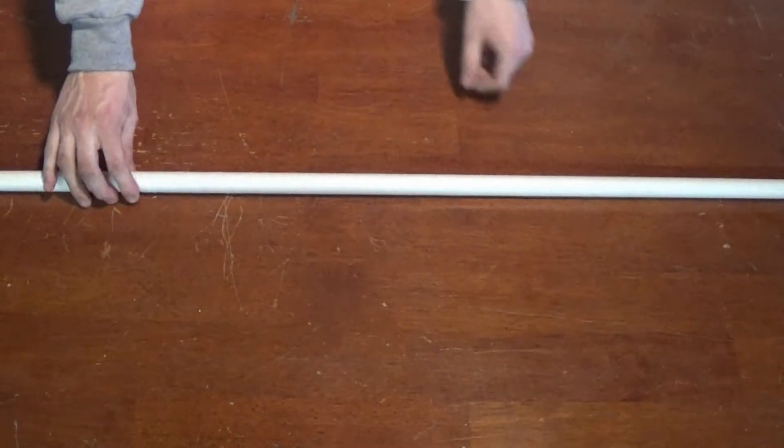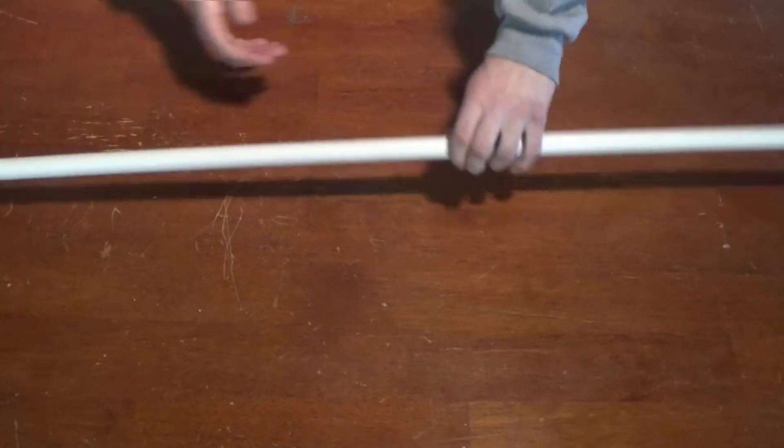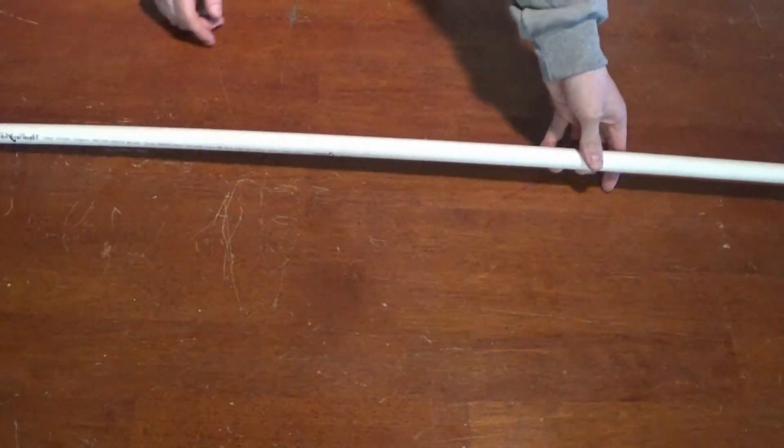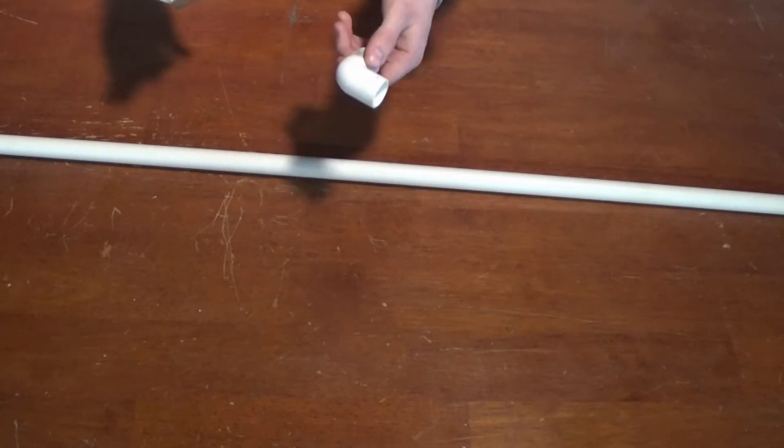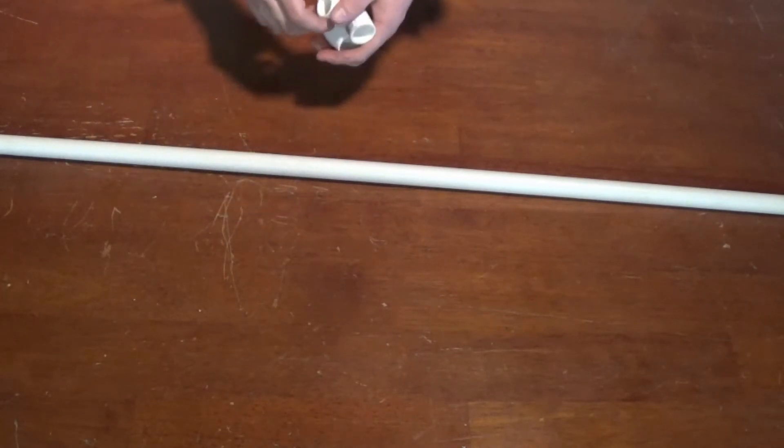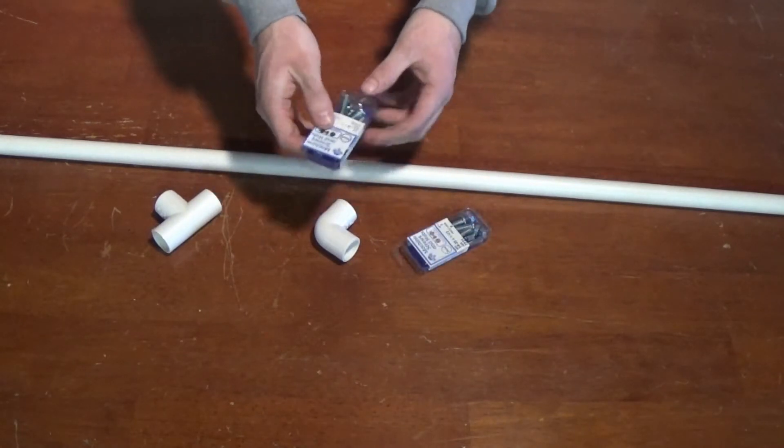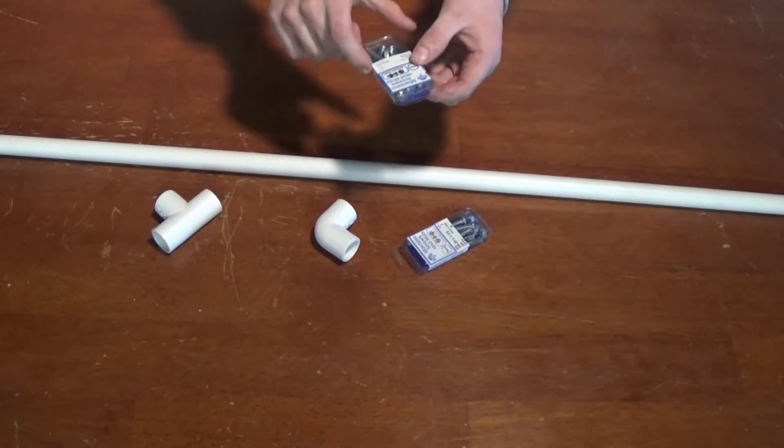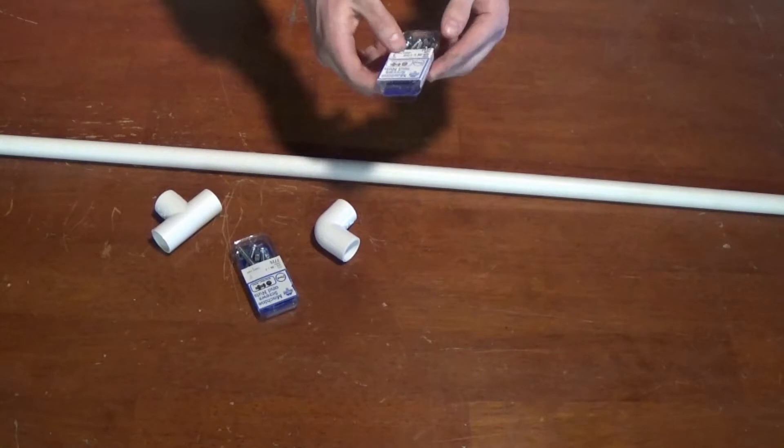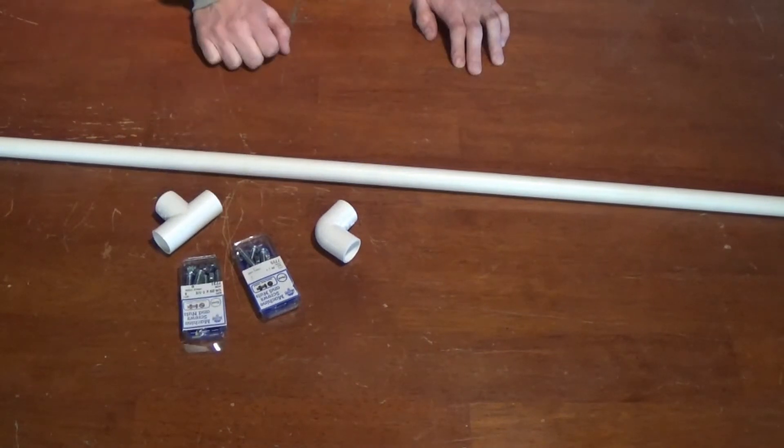Alright guys, here's all the stuff I'm using today. Obviously a piece of PVC pipe - I believe this is half inch, maybe three feet long. I also got some elbows, I think four of them, and a couple of tees. I'm not sure how many I'll use in the end. I also got some bolts that will fit into the threads on the bottom of my camera - some that are an inch long and some that are an inch and a half.